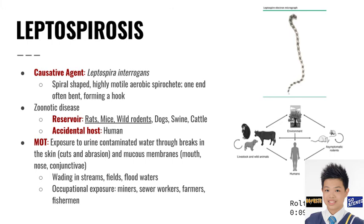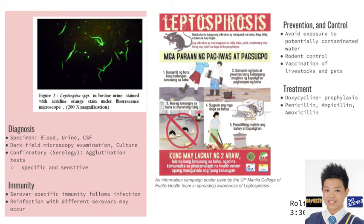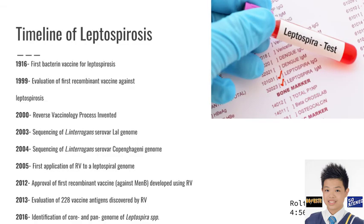Leptospirosis causative agent is Leptospira interrogans. It is a zoonotic disease, with reservoirs being rats, mice, and wild rodents. Mode of transmission is exposure to urine-contaminated waters through breaks in the skin and mucous membranes. Diagnosis is through dark field microscopy examination and culture, with confirmatory serology via agglutination test. Prevention and control includes avoiding exposure to potentially contaminated water.